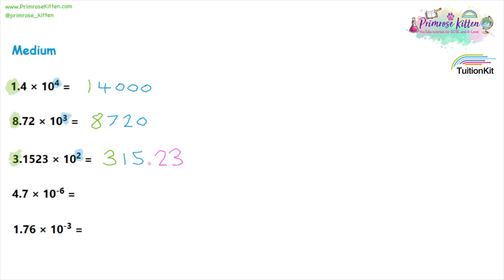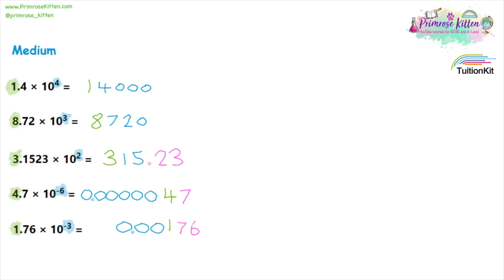Some ones here that are below zero. We keep the four and put that on the right hand side, and we have 10 to the minus 6. So in front of that, we need to put six zeros, and after the first zero we put in a decimal point. We can't forget that seven — it needs to go at the end. The last one needs to go on the right hand side, and it is 10 to the minus 3. So in front of that one we need to put three zeros, and after the first zero we put a decimal point. We can't forget about that seven and that six — they need to go after the one.